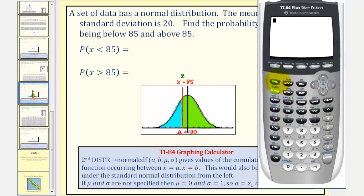So we'll begin by pressing second VARS for distribution, option two. Now we're going to enter our lower bound data value. Let's go ahead and use negative 99,999, comma, the upper bound data value is 85, comma, mu, which is the mean, which is 100, comma, the standard deviation, which is 20. Close parenthesis, and enter.